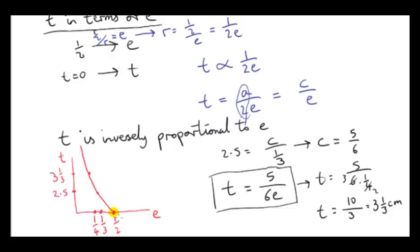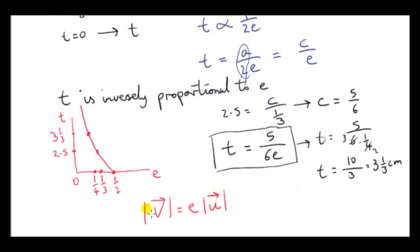At e equals one half the thickness is 0 — there's no paper. When e is one third the thickness is 2.5; when e is one quarter the thickness is 3 and one third. As e approaches 0 the thickness gets larger and larger. According to this model, as e approaches 0 the thickness approaches infinity — because when e is 0 the particle doesn't bounce, meaning the speed just after impact is 0.